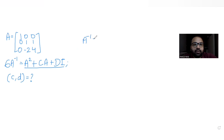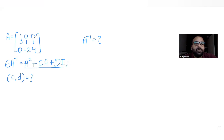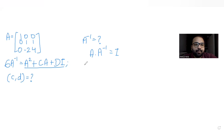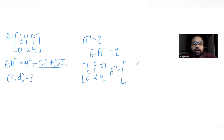To find A inverse, there are various methods such as the co-factor matrix and adjoint matrix method. However, using elementary row transformation will be most efficient here, since the matrix already has several one-zero entries. So we set up A next to the identity matrix and apply row operations to find A inverse.